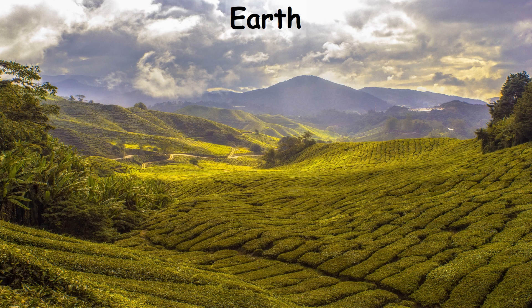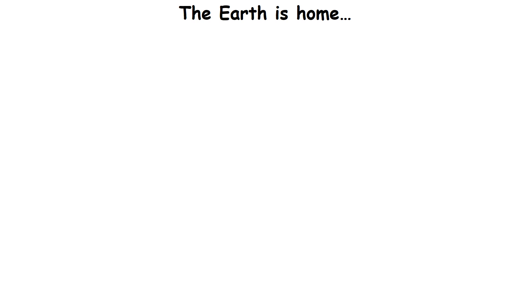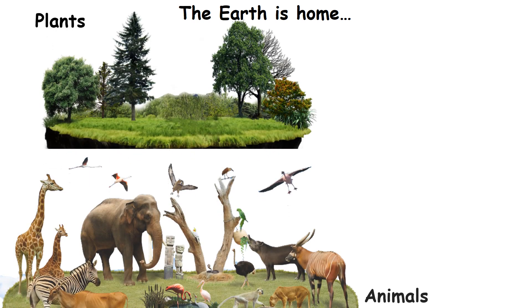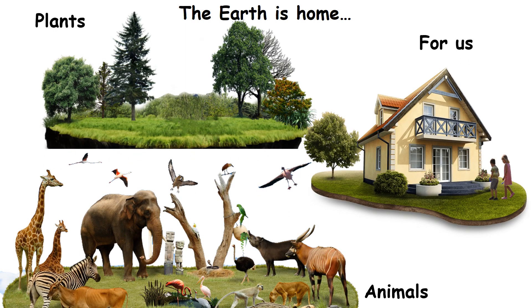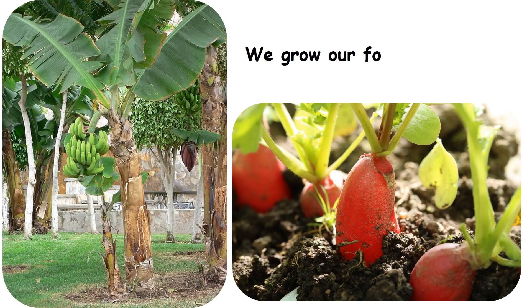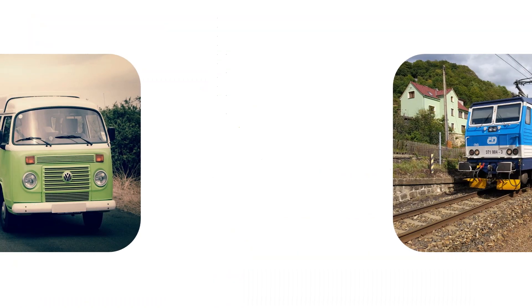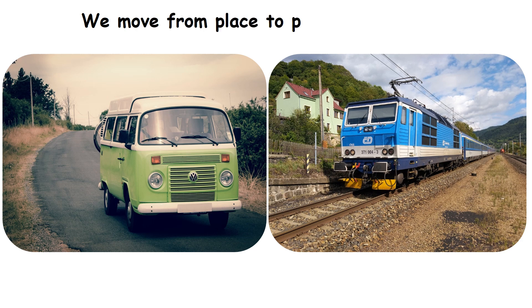Earth. The earth is the home for plants, animals, and forests. People build their houses and live here. We grow our food on the land. We move from place to place on the land.